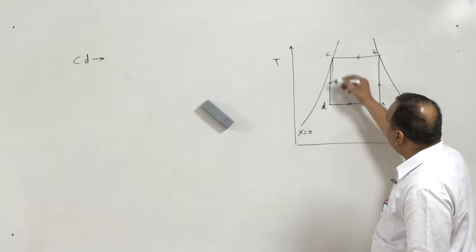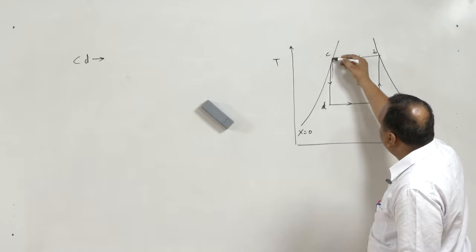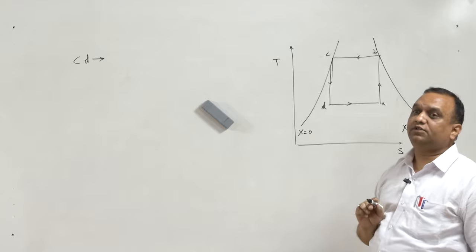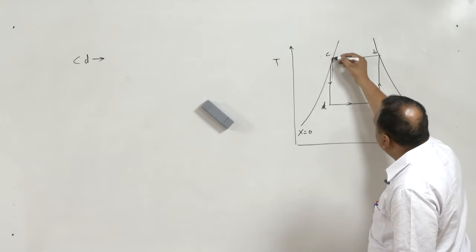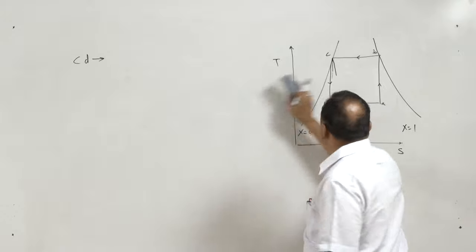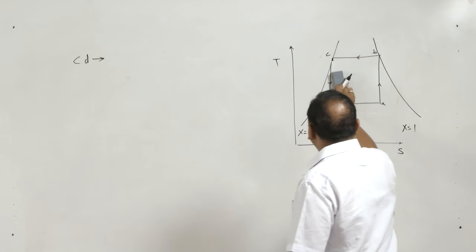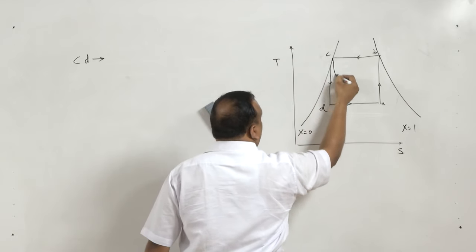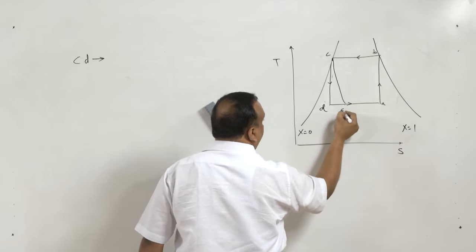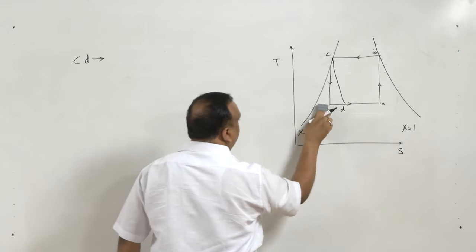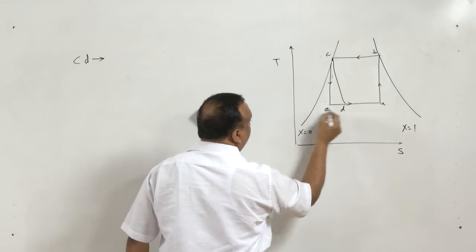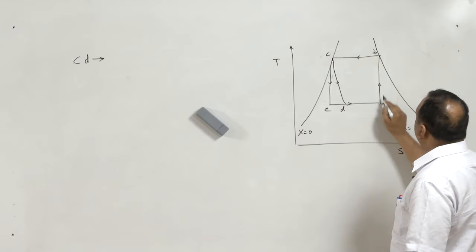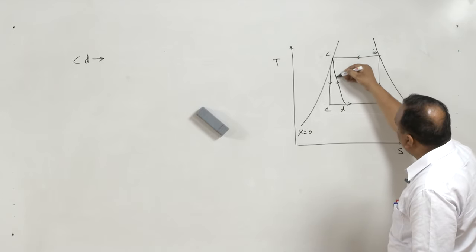So instead of using an expander, process C to D is made isenthalpic. If we have high pressure liquid it can be throttled to low pressure with the help of a throttling device. So instead of the isentropic process C to D, point D will be shifted, and the entire refrigeration cycle will be A-B-C-D, where C to D is a constant enthalpy process.